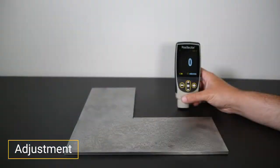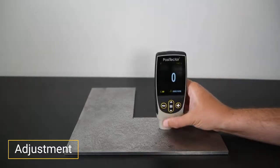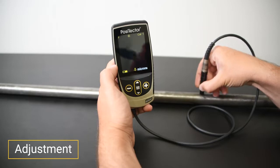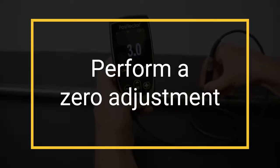Check zero on the uncoated substrate. If the instrument measures within tolerance at zero, the instrument is measuring accurately. If not, typically due to substrate mass, composition, or geometry, simply perform a zero adjustment.